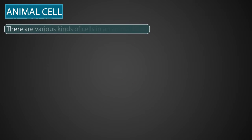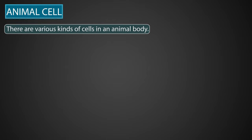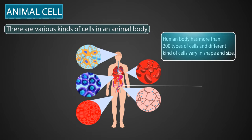An animal cell is surrounded by a plasma membrane. It has a membrane-bound nucleus and many membrane-bound organelles inside it. There are various kinds of cells in an animal body — all the cells in an animal body are not the same. For example, the human body has more than 200 types of cells. Different kinds of cells vary in shape, size, and functionality.